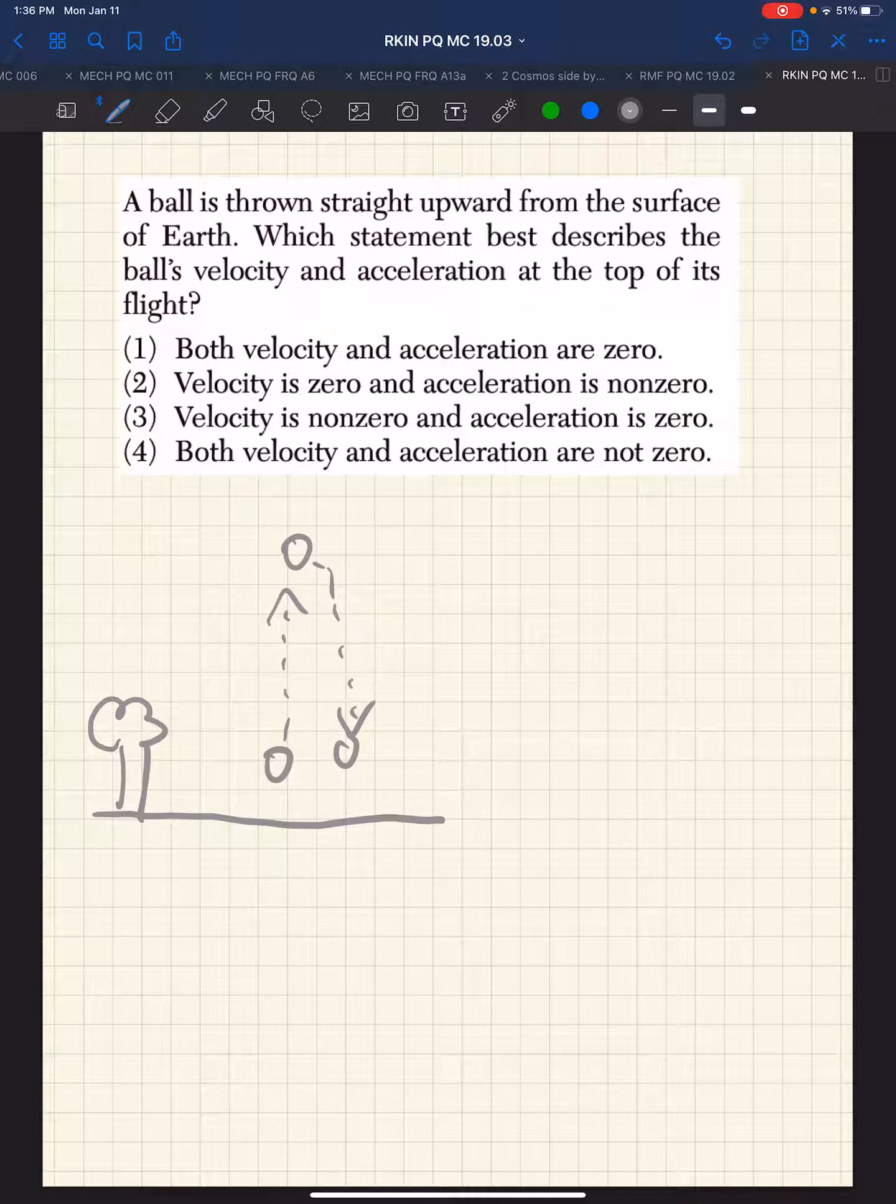So what we know is that whatever this velocity is, it decreases on the way up. The velocity is zero at the top and then it increases in magnitude on the way down. Such that if it started out at 20 meters per second, it would decrease by 10 meters per second to 10, then to zero, then minus 10, then minus 20.